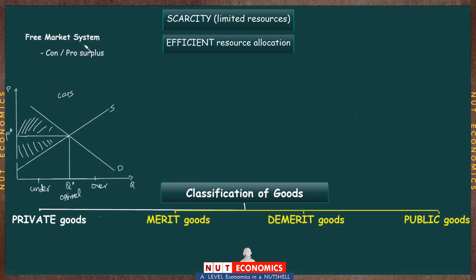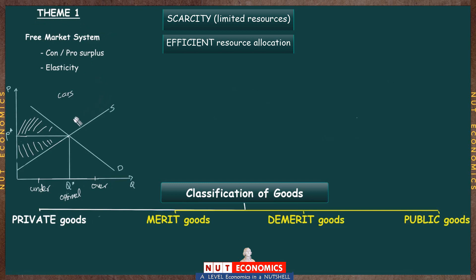You can think of three different topics — the working of the free market or demand and supply, consumer and producer surplus, and elasticity — as part of Theme 1, where we are just trying to understand how this free market works. Elasticity is simply an attempt to understand in a technical way the finer details of how this price mechanism operates.